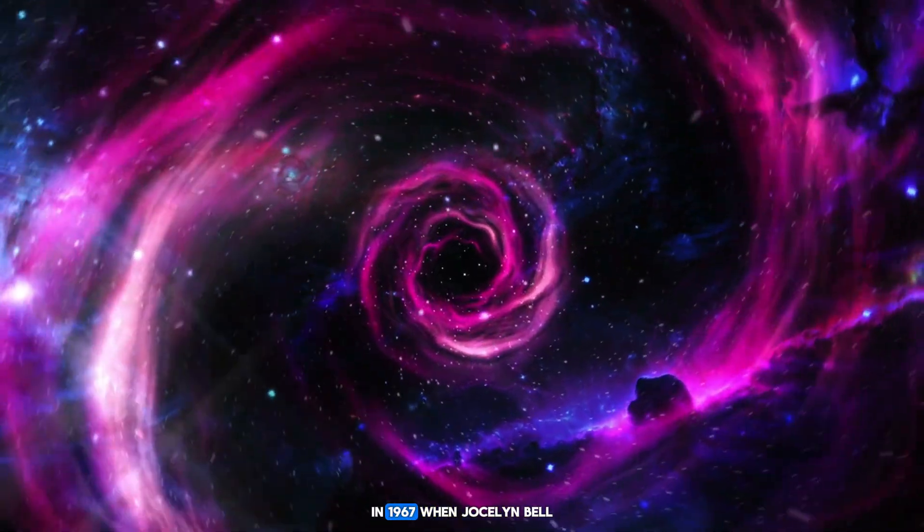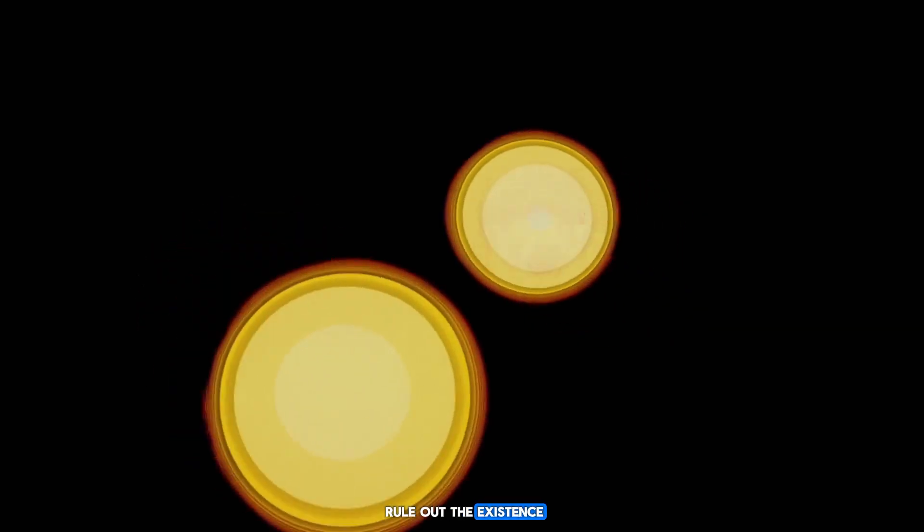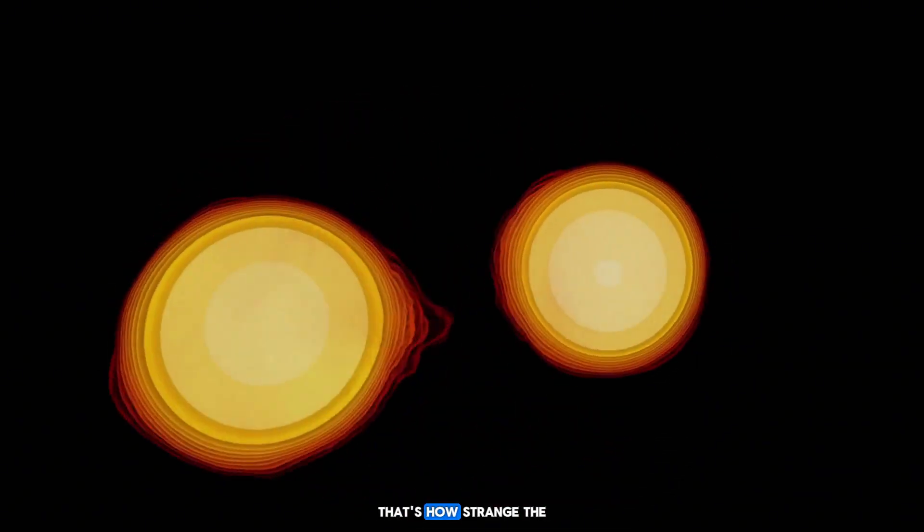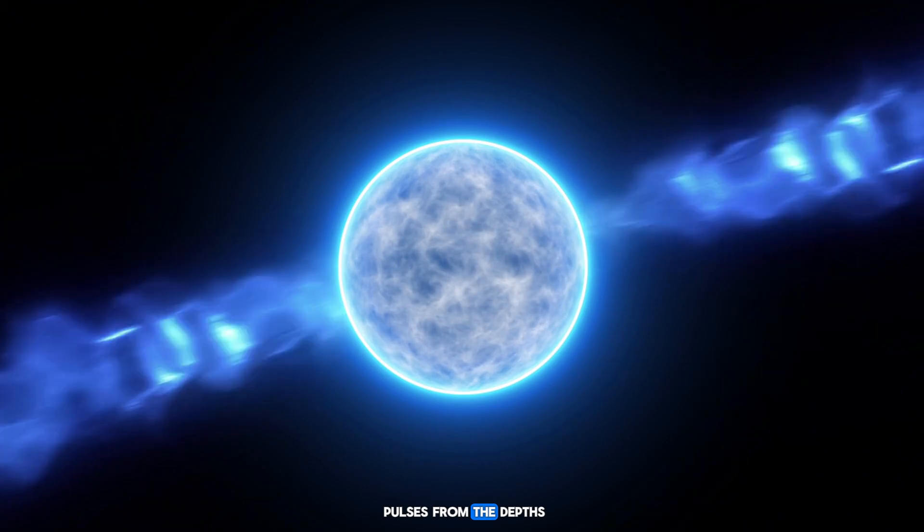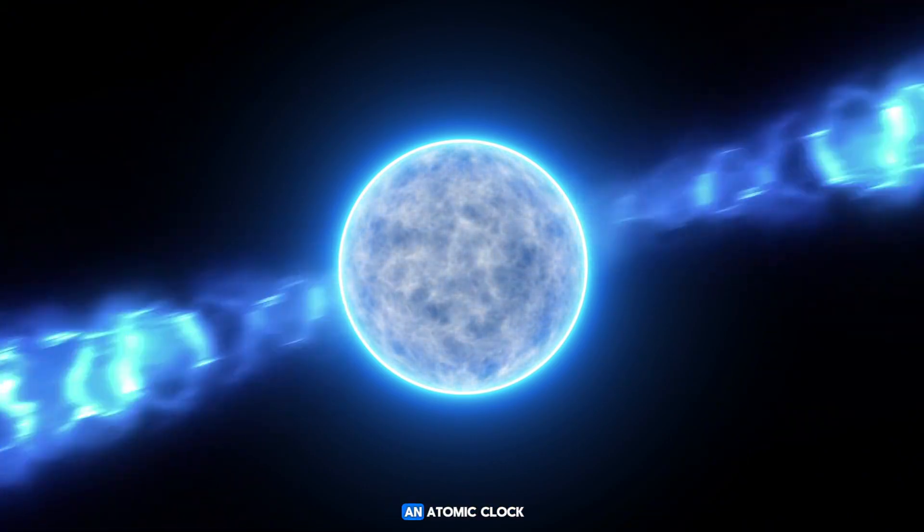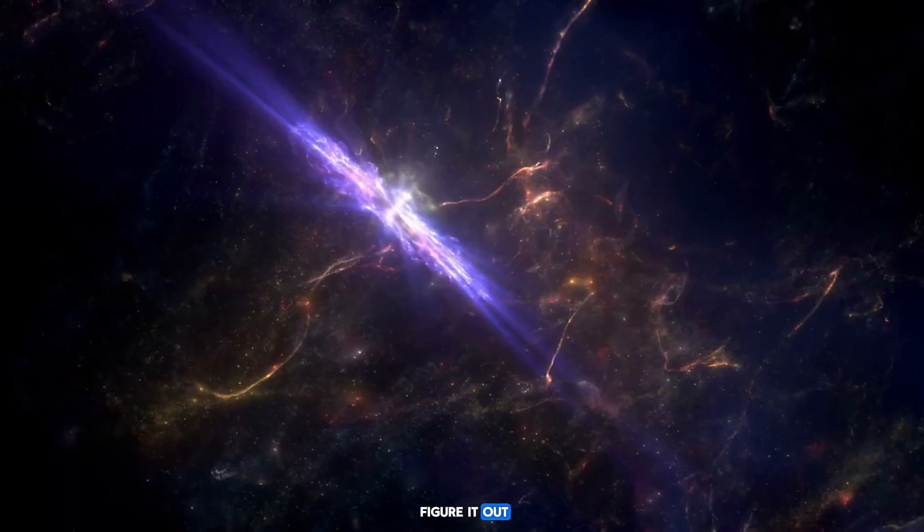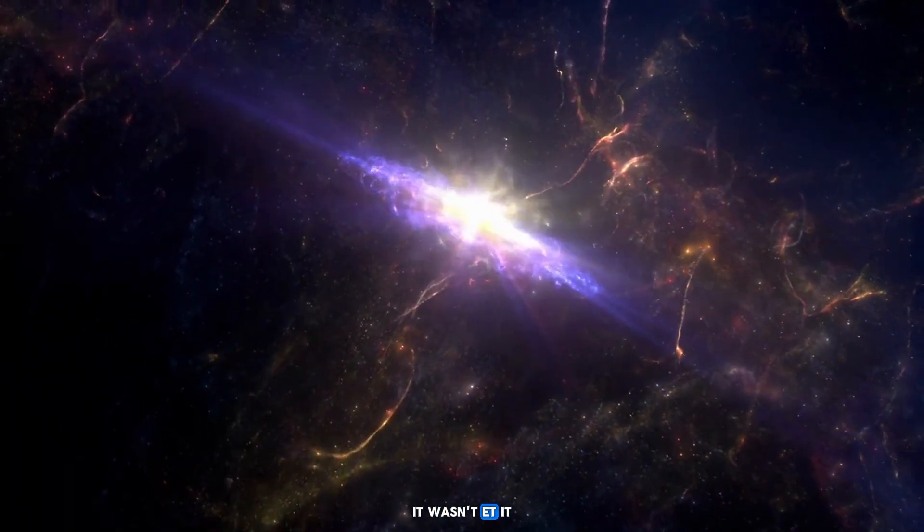Initially, scientists had no idea what they were. In 1967, when Jocelyn Bell first picked up the rhythmic signals of the first known pulsar, the team did not rule out the existence of aliens. That's how strange the phenomenon was. What was sending radio pulses from the depths of space with the precision of an atomic clock?